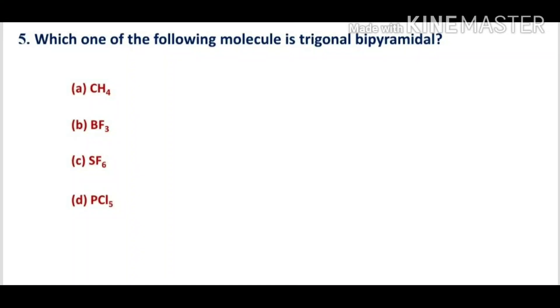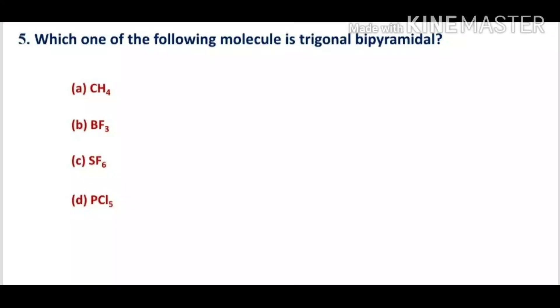Option D, PCl5, has five bond pairs and no lone pairs, so its shape is trigonal bipyramidal. Therefore option D is the correct option.